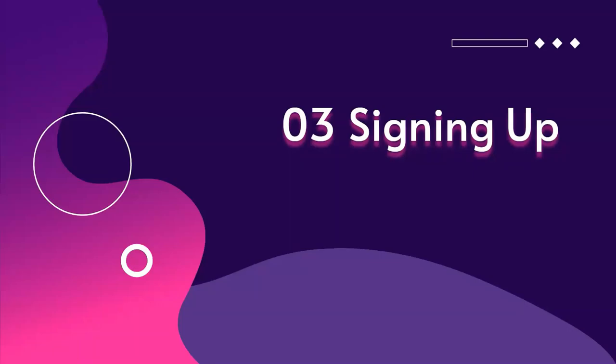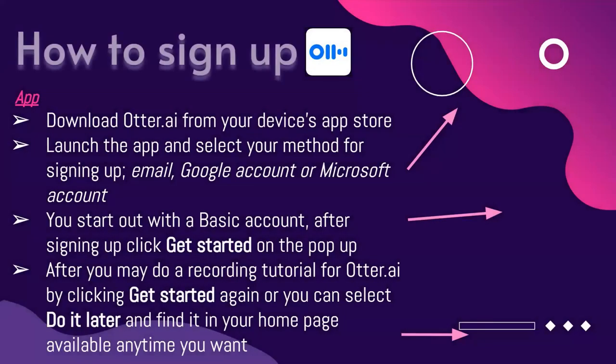So how do you sign up for Otter AI? You sign up by downloading Otter AI from your device's app store. You can launch the app and then select your method to make an account — either your email, Google account, Microsoft account, Apple account, etc. You can also start with the basic account and just press get started on the pop-up and you're good to go. Otter AI provides a tutorial after you start to help teach you all the features, but if you want to skip it, you can just press do it later and find it on your homepage whenever you want.